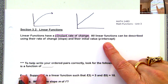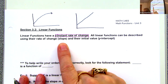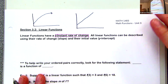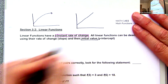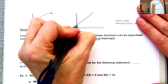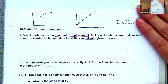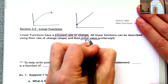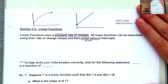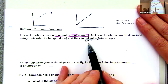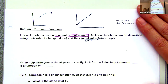All linear functions can be described using their rate of change — the slope — and their initial value. We've dealt with initial value before: it's typically where the function starts, when the variable equals zero. Zero time has passed, zero minutes, zero years since 2000 — whenever the variable is zero, that is the initial value.